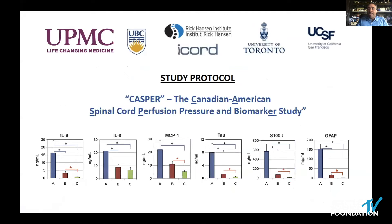We're combining this with a study called the CASPER trial, where we collect spinal fluid and blood to look for biomarkers that indicate injury severity and can prognose which patients are more likely to recover over time.